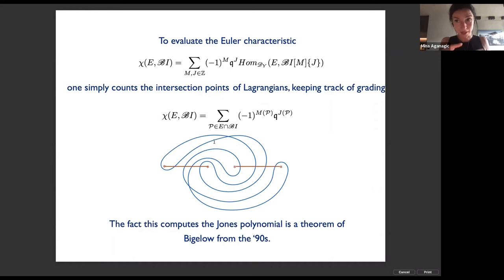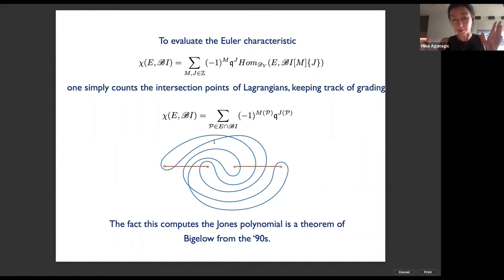This theory has two equivariant gradings — one associated with q and the other associated with a holonomy around S^1, because one can also describe links in R^2 × S^1. Here we're keeping the knot in just a single patch of the Riemann surface, so the second grading associated with holonomies doesn't come in and the theory becomes single-graded. To compute the Euler characteristic all you need to do is count intersection points between Lagrangians, keeping track of grading.